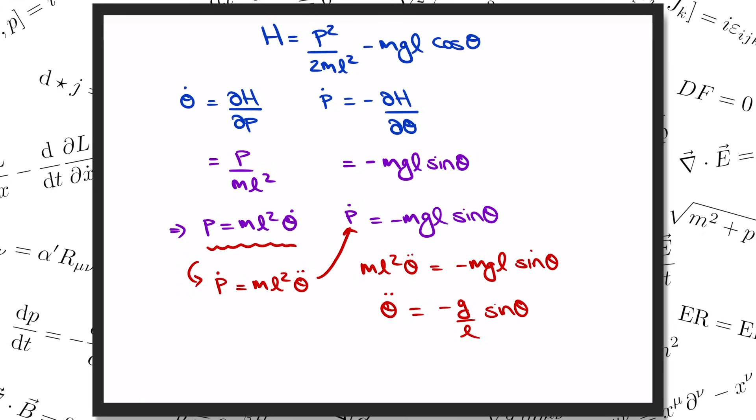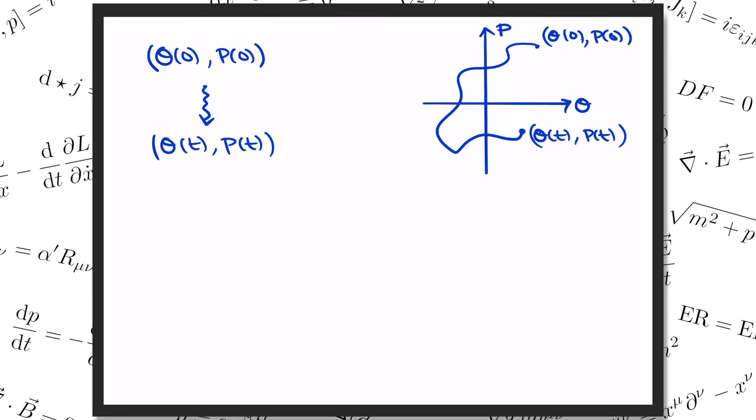To specify what the pendulum is doing at any given instant in time, we just need to give its position and velocity, or equivalently its position and momentum theta and p. With this initial data we can figure out what the pendulum will be doing at any later time by solving Hamilton's equations for theta of t and p of t. The pairs of thetas and p's define a plane which is called the phase space of the system. We start out at our initial condition theta of zero, p of zero, and as time goes on, our coordinate moves around this theta-p plane tracing out a curve which is known as a flow on this phase space.